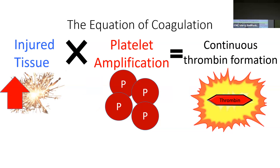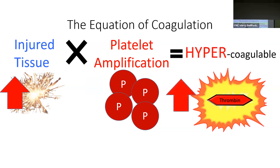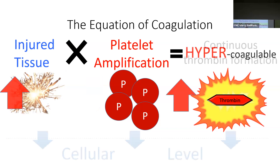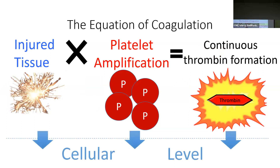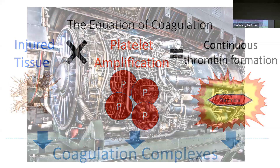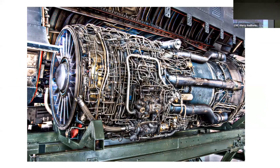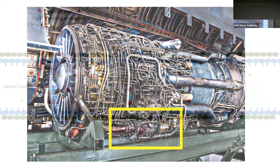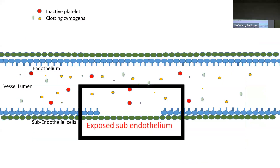Now we need to look at the anatomy and physiology occurring at the cellular level. In the words of our late chief Dr. Brad Young: let's get back to the science. We'll introduce the concept of coagulation complexes and how they are essential in understanding the physiology and pathology of coagulation — like taking a smaller portion of the SR-71 engine such as the fuel injector or exhaust valve.